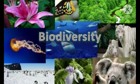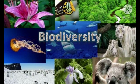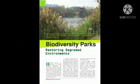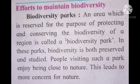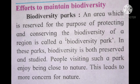Here are the effects and efforts to maintain biodiversity. There are three main types to be explained. First is biodiversity parks. An area which is reserved for the purpose of protecting and conserving the biodiversity of a region is called a biodiversity park. Biodiversity parks are huge parks.